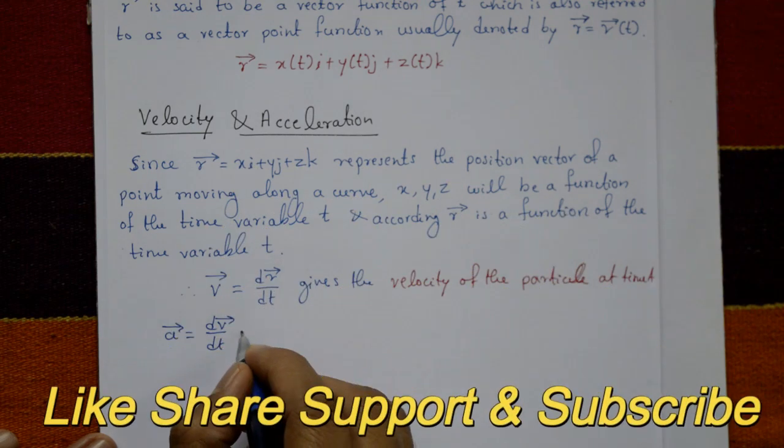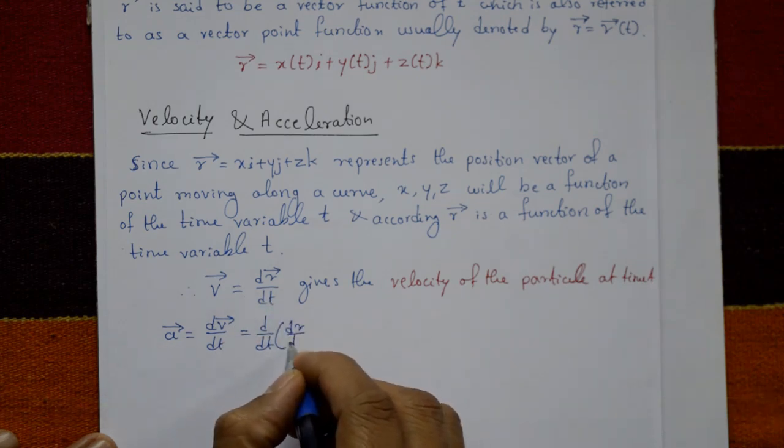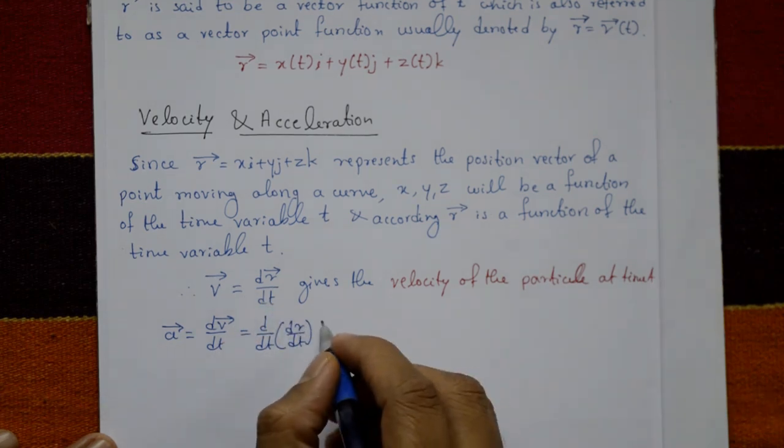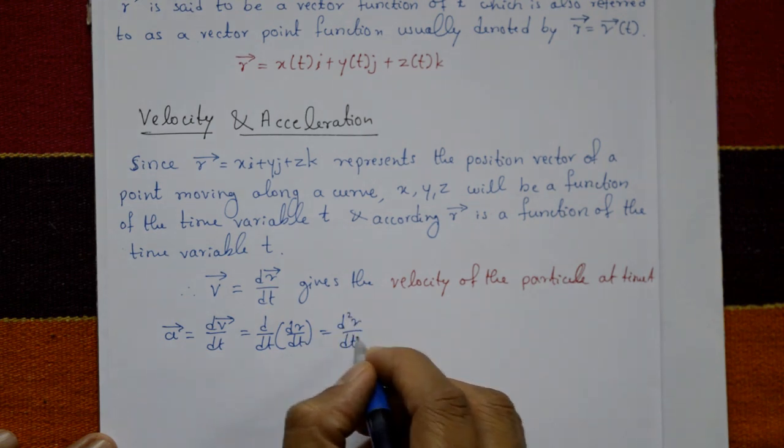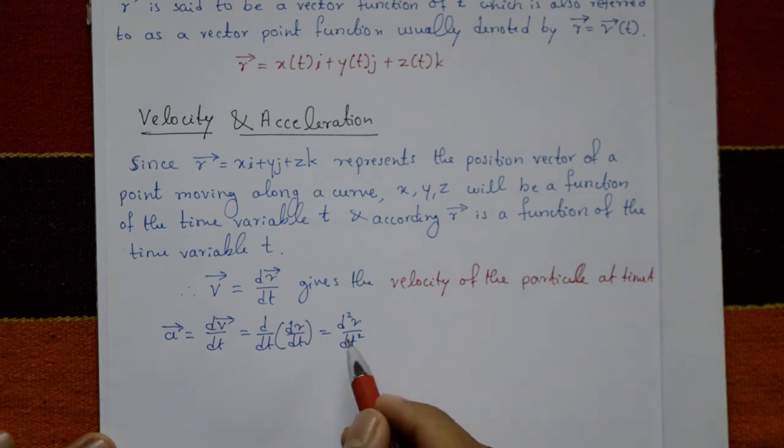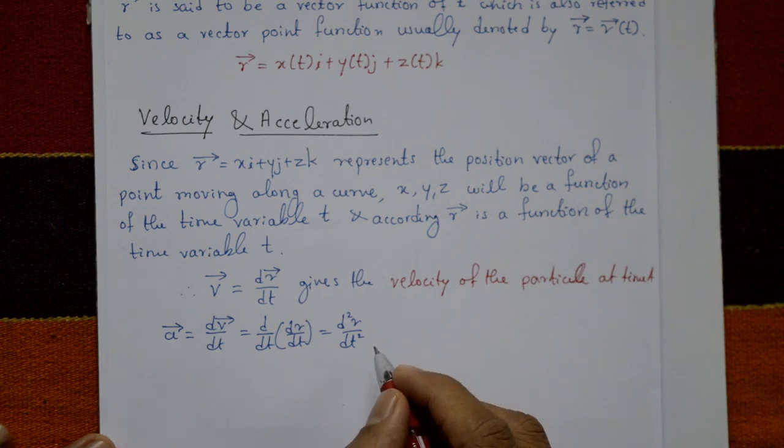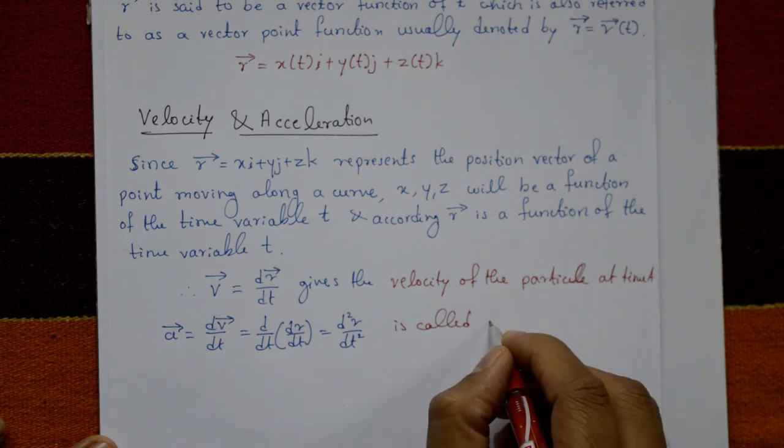That is, a = d²r/dt² represents the rate of change of velocity and is called acceleration.